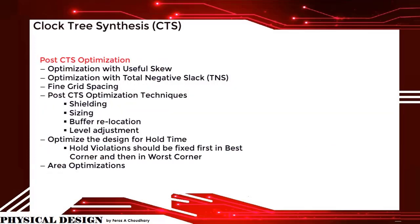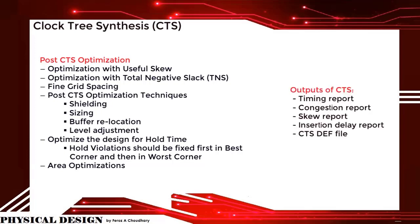For post-CTS optimization: optimization with useful skew, optimization with total negative slack, find grid spacing. Post-CTS optimization techniques like shielding, sizing, buffer relocation, and level adjustment can be done. Optimize the design for hold time — hold violations should be fixed first in the best corner and then in the worst corner. Area optimizations. Outputs of CTS are: timing report, congestion report, skew report, insertion delay report, and CTS DEF file.